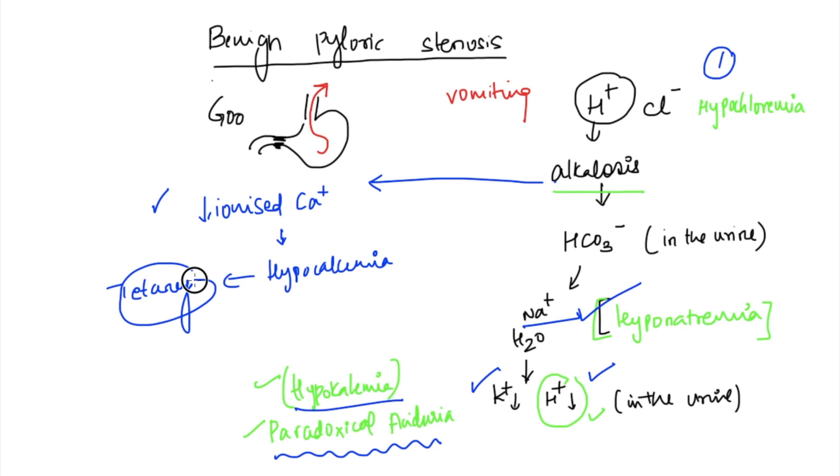Now at the end of this, if I would want to give you a cheat code, it is hypo in everything. Just remember: hypochloremia, hyponatremia, hypokalemia, hypocalcemia - so it's all hypos with paradoxical aciduria.